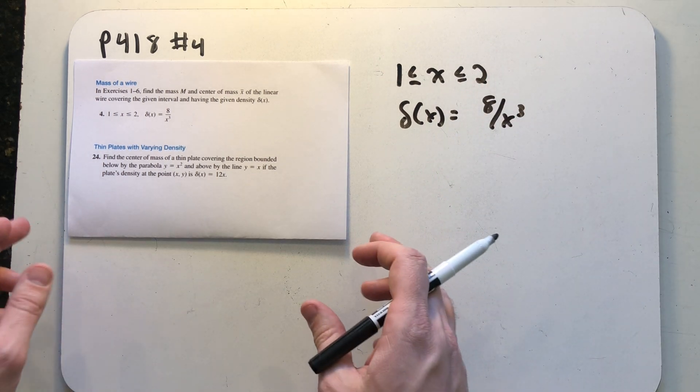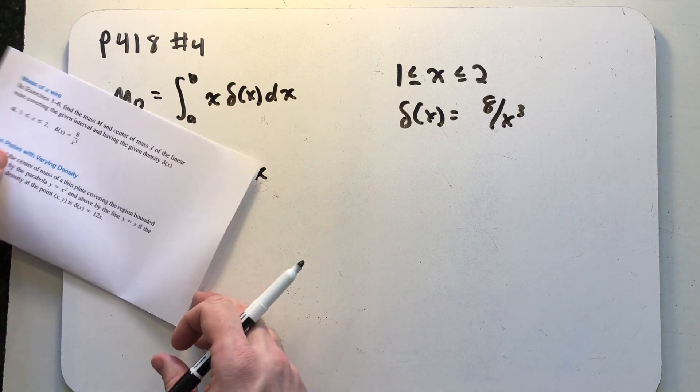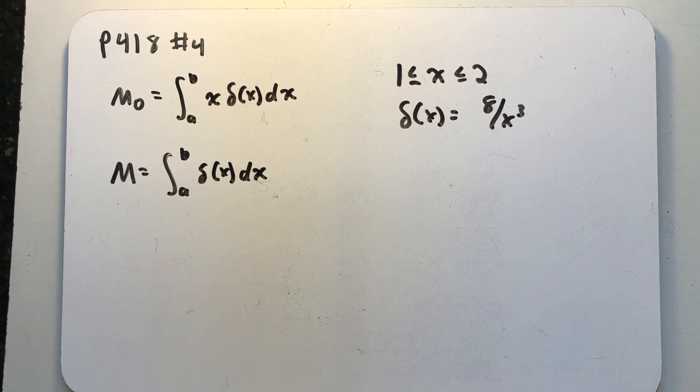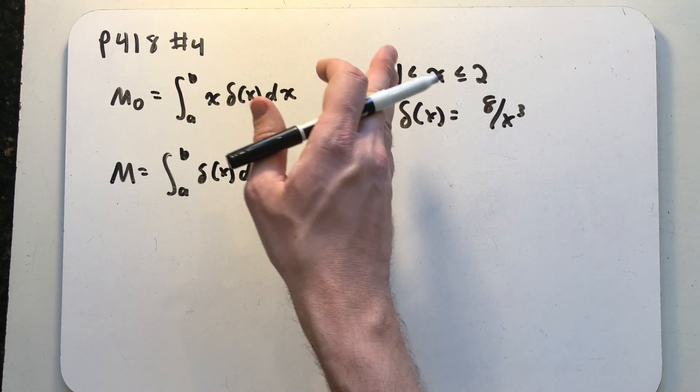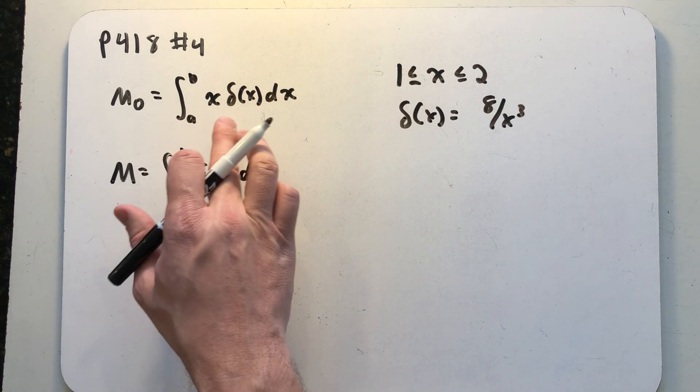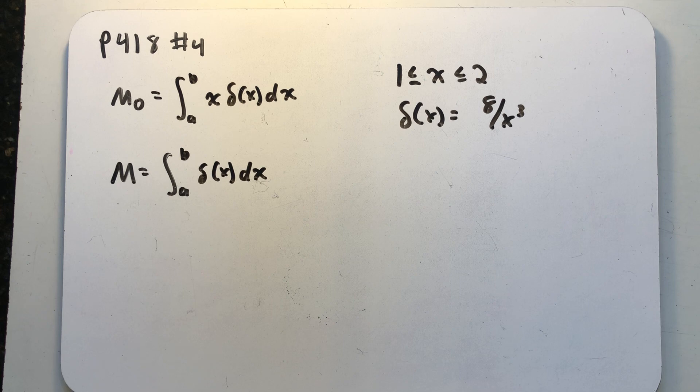We're going to find the center of mass using these two formulas established in class. The moment about the origin which is the integral from a to b, and in this case 1 to 2, of x times the density function delta x dx.